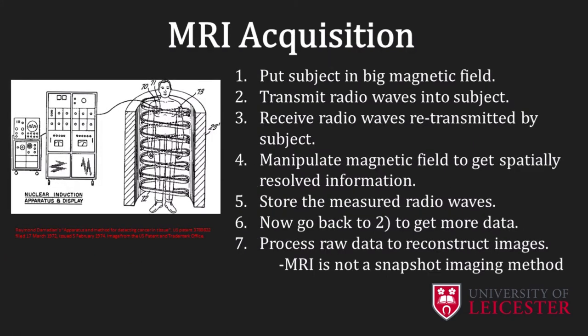A very basic description of an MRI acquisition is as follows. We first place a person into a large magnet. We then transmit radio waves into the person. The radio waves interact with the hydrogen nuclei within the body tissues, stimulating changes in energy. We can think of the radio waves causing changes in the orientation of tiny bar magnets within the body relative to the main static magnetic field direction. This results in radio waves being emitted from the person which can then be detected. We obtain spatial information by manipulating our external magnetic field while detecting the radio waves. The data is stored in a large computer and after completing all the different magnetic field changes to get all necessary signals, the data is processed and reconstructed.